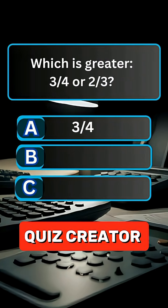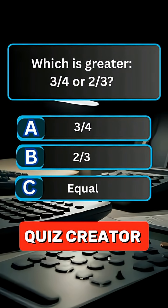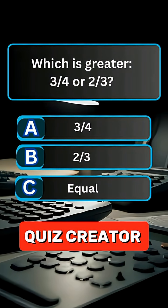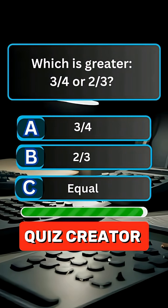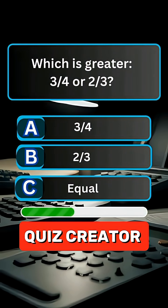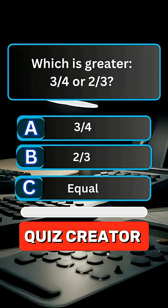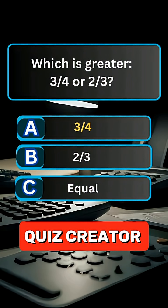Question 7. Which is greater, 3 by 4 or 2 by 3? Answer A, 3 by 4.